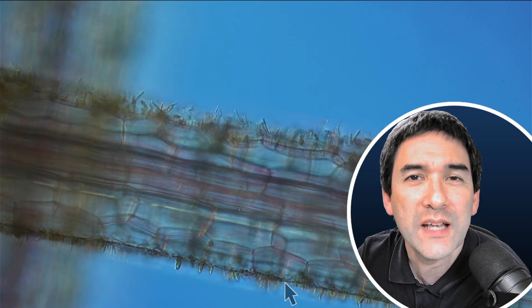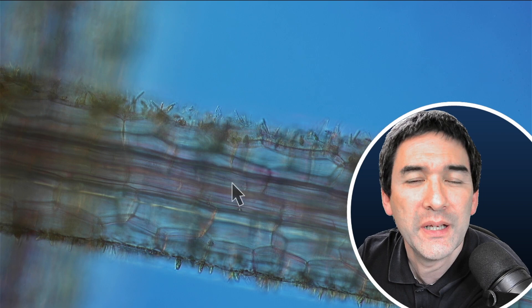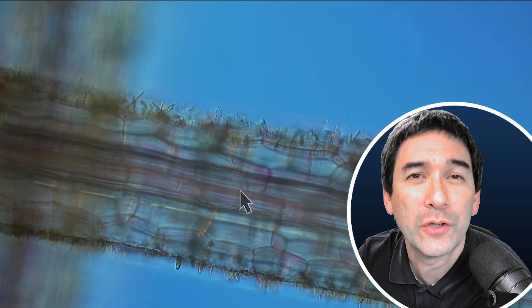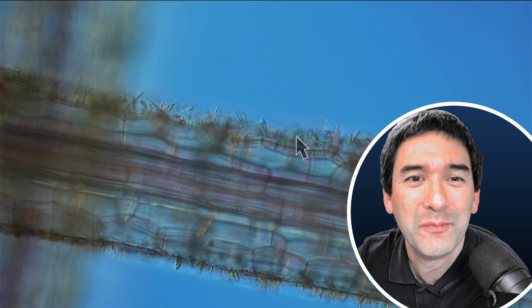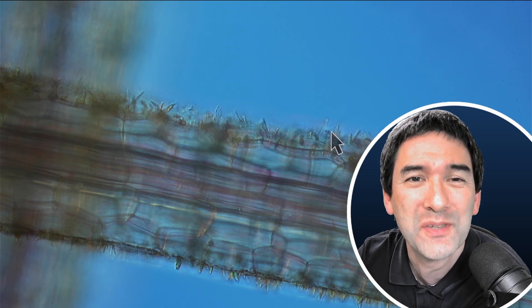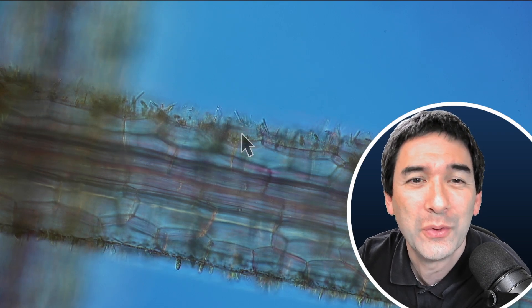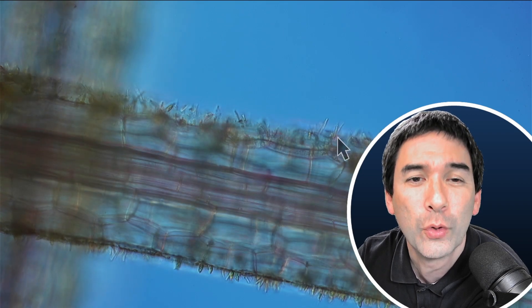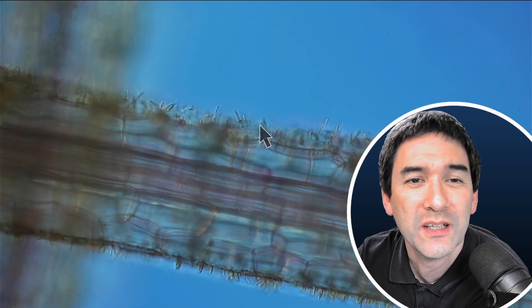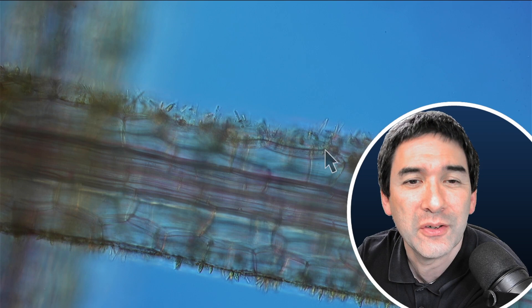This shows that the algal filament must have been in the water for a longer time to give sufficient time for the cyanobacteria and other organisms to grow on here. So what we have here is actually a so-called biofilm forming on the surface of this filament.